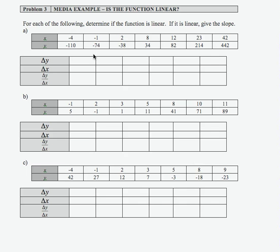In this example, we're asked to determine if the functions are linear. Given the data sets for A, B, and C, we need to look at the relationship between change in Y, change in X, and the ratio of change in Y over change in X to determine if the functions are linear.